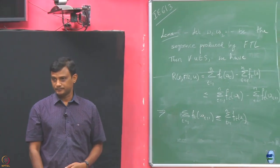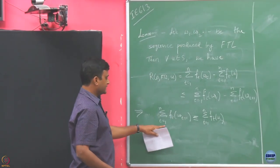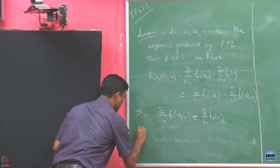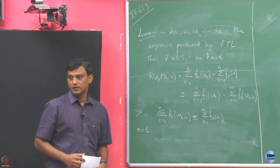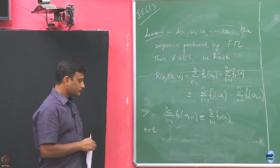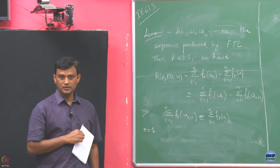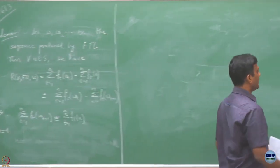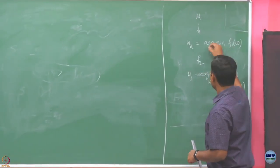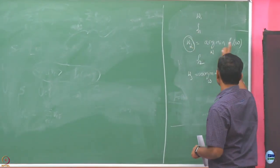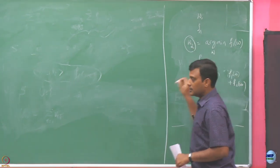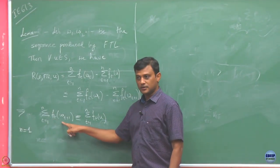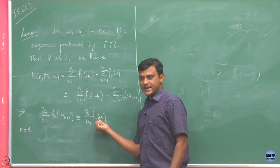We are going to prove this by induction. T is running from 1 to n. Let us take n equals to 1 first. Is this true for the first round? In the first round, as soon as you get F_1 you are going to choose W_2 which minimizes F_1. For n equals to 1, F_1 of W_2 is definitely going to be smaller than any point U — that is why you are choosing W_2.